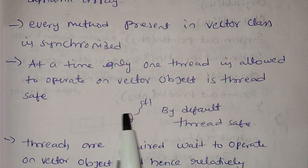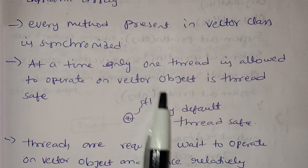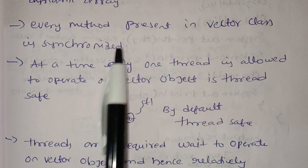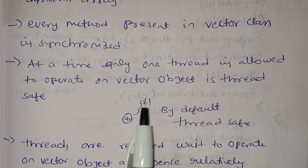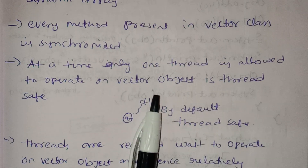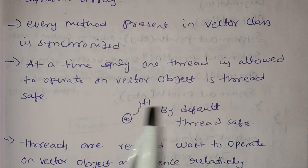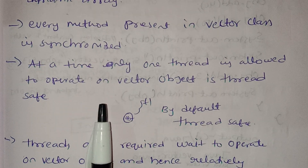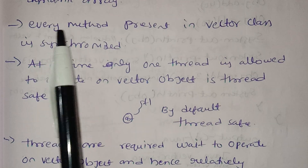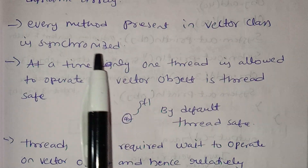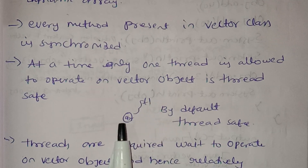This makes it thread-safe. Consider an analogy: if there are many dogs and they all try to eat the same chicken at once, there is inconsistency. Synchronization prevents this — only one can access at a time. We have explained this synchronization concept in a separate video. Every method in the Vector class is a synchronized method.